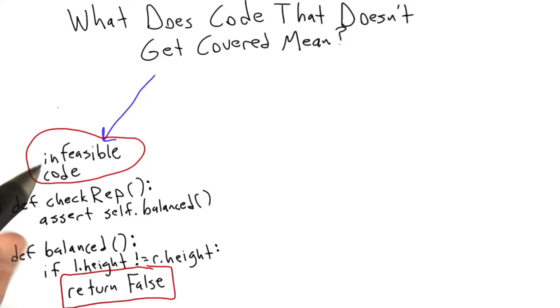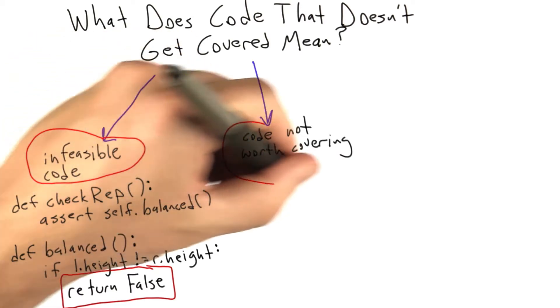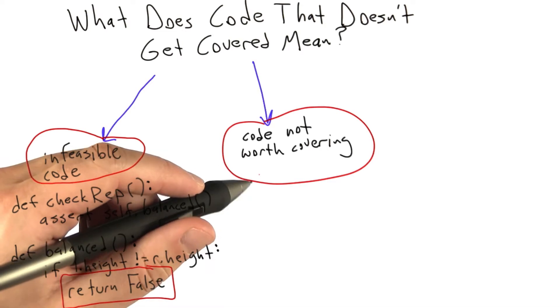Case one of code that doesn't get covered is infeasible code. The second case is code that we believe to be feasible but which isn't worth covering. Code might not be worth covering if it's very hard to trigger and it's very simple.